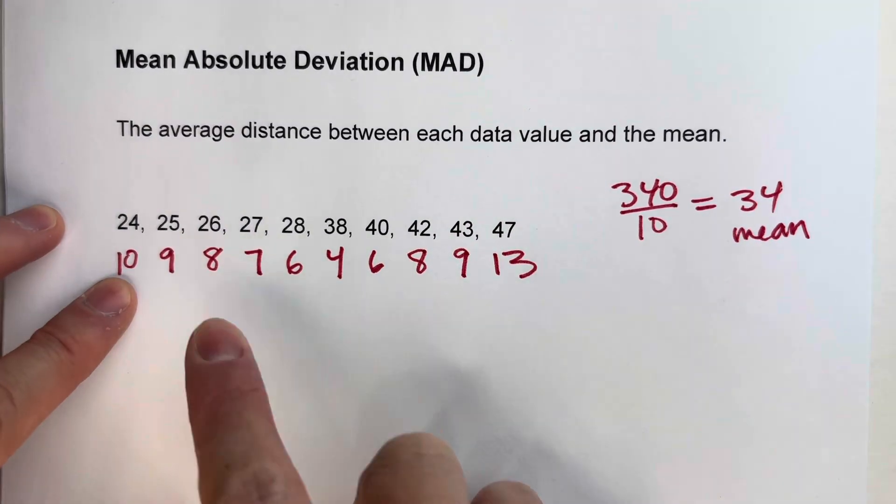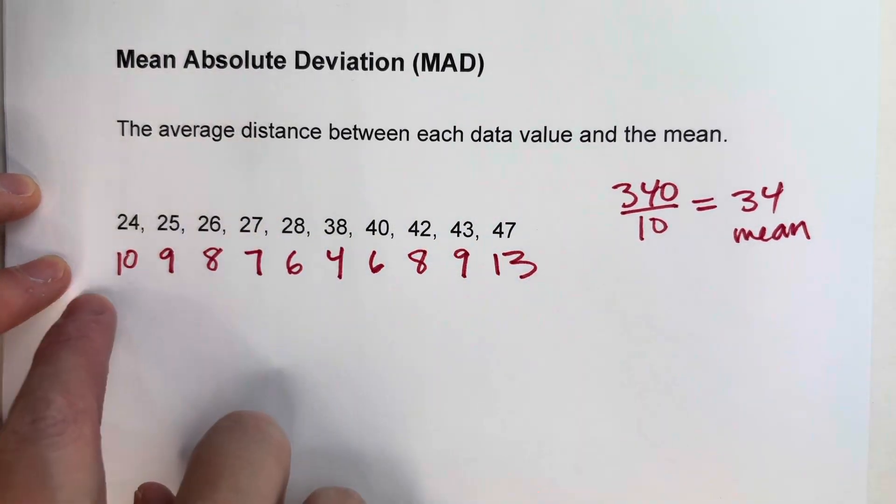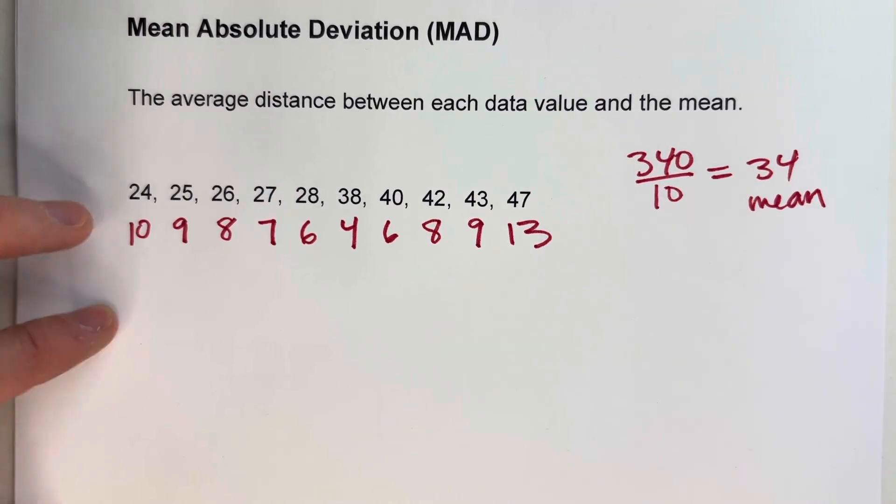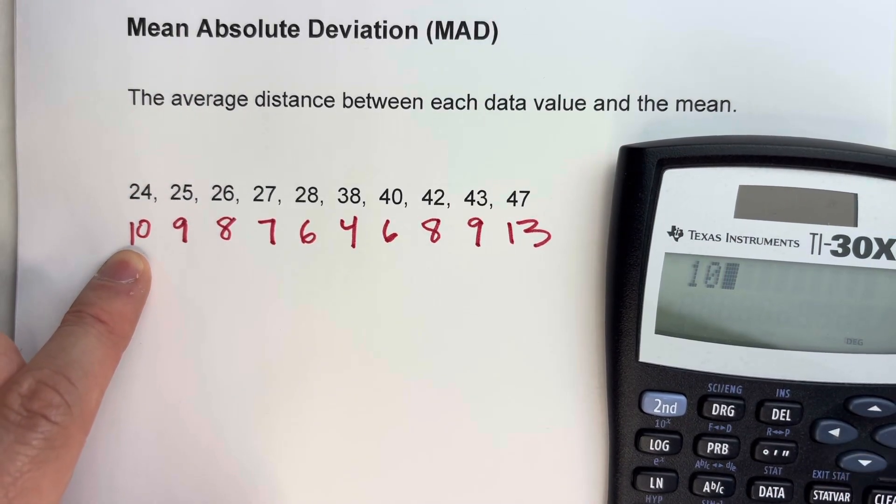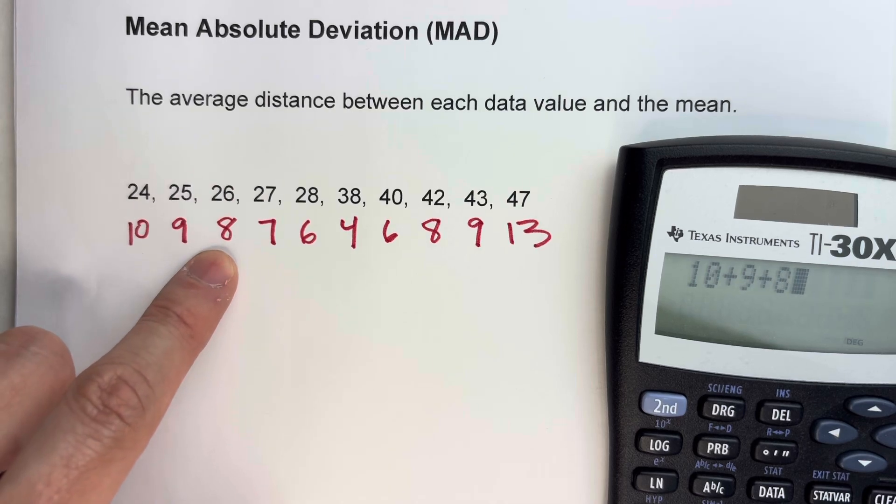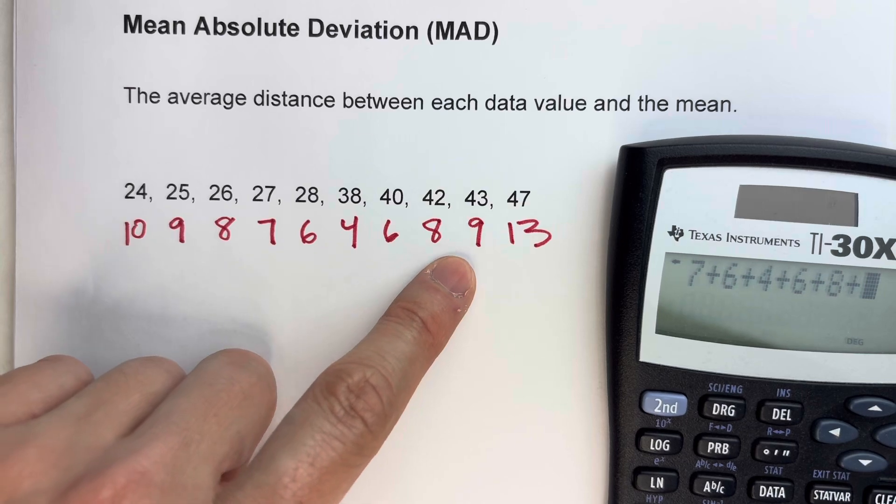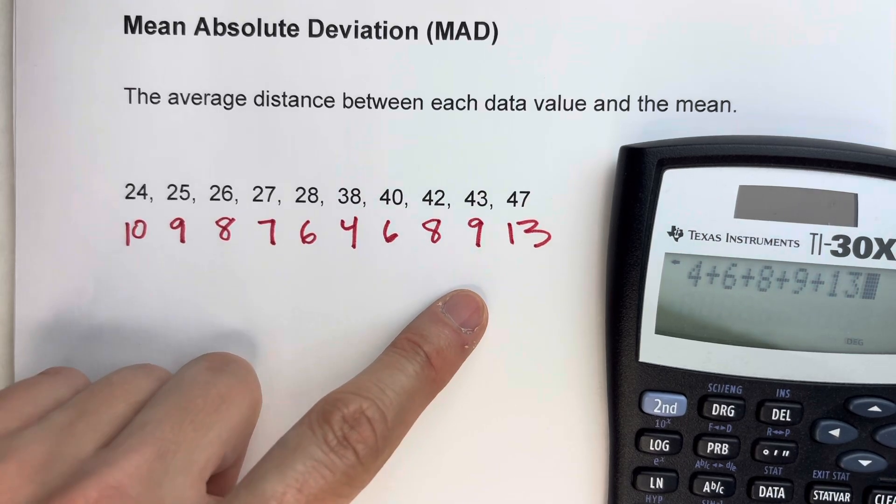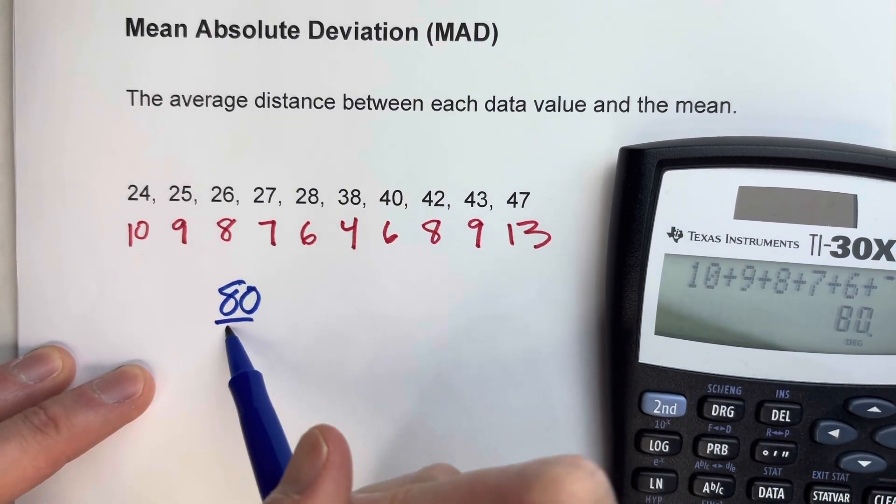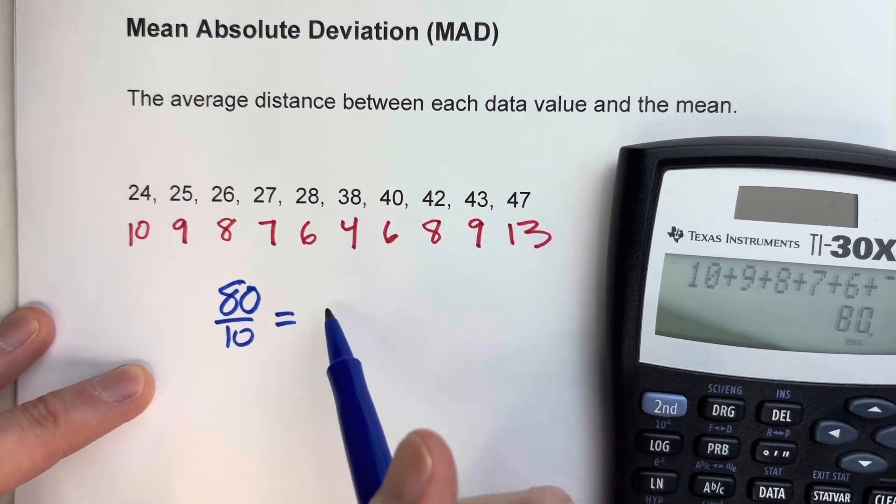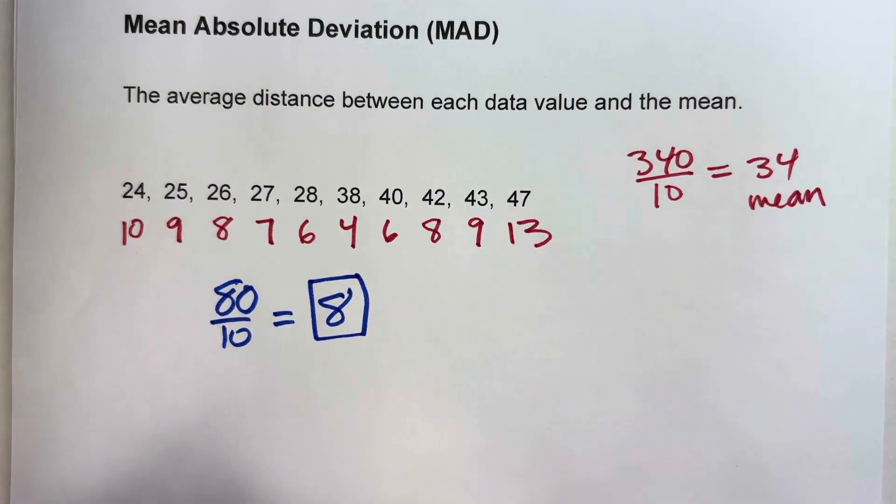Step 1, step 2, and our last step, step 3, is we're going to find the mean of all of these deviations. So again, we're going to need the calculator. Here we go, 10 plus 9 plus 8 plus 7 plus 6 plus 4 plus 6 plus 8 plus 9 plus 13 gives me 80 divided by 10 data values. So the mean of all those numbers is 8, and that is our mean absolute deviation.